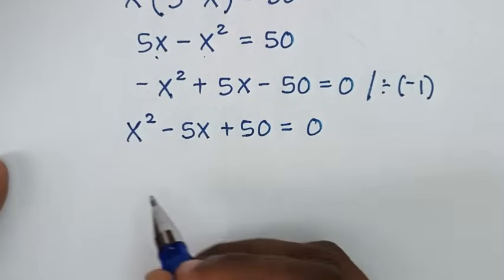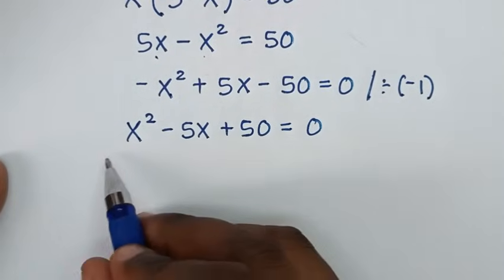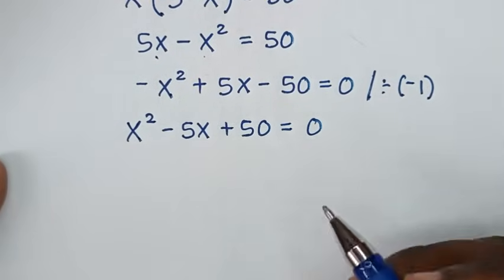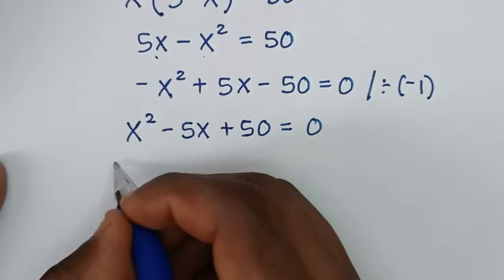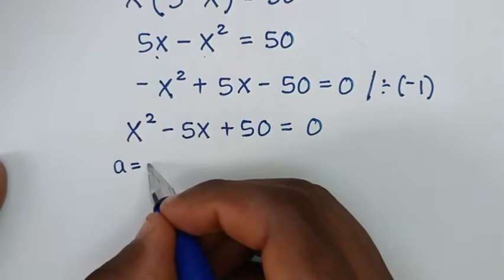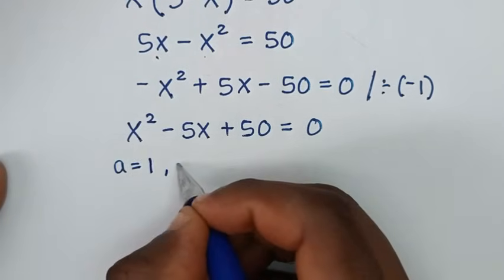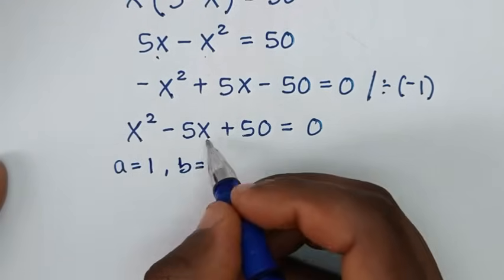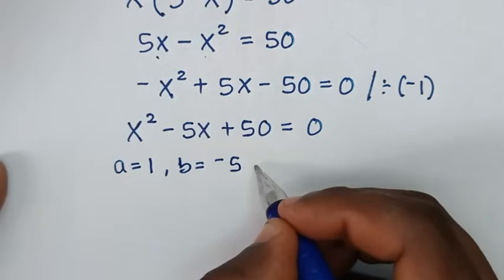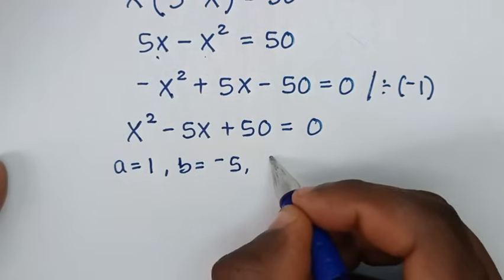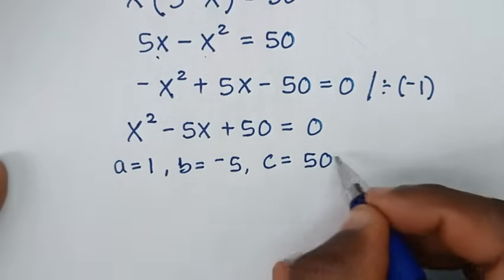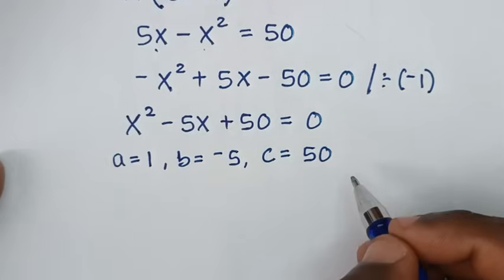From this quadratic equation, we'll solve using the quadratic formula. The coefficient of x squared is a equals 1, the coefficient of x is b equals negative 5, and the constant term is c equals 50.